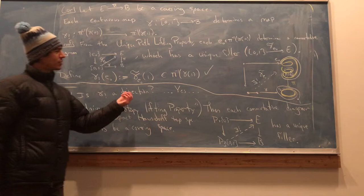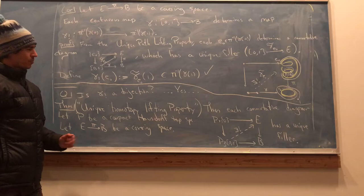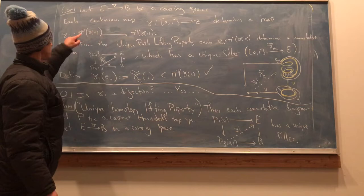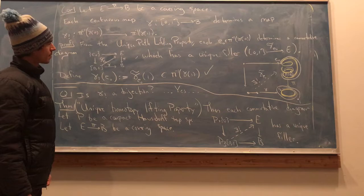So now we can ask the question, is gamma lower shriek a bijection? The answer is yes. But to prove that, well here's an idea for how to prove that. Let's see, what would the inverse to this be? If this was a bijection it would have an inverse map. Oh, well just run your path backwards. Right? That's a good idea.